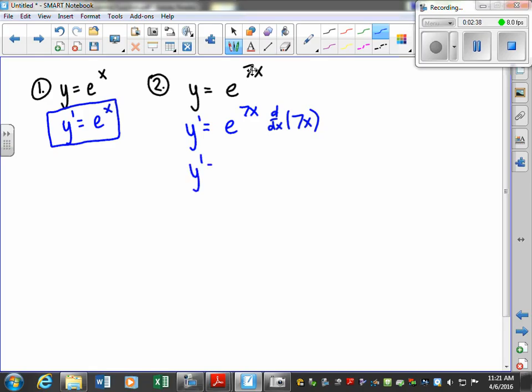So we'll have d dx of 7x. So y prime is just going to be e to the 7x. And we evaluate the derivative here, which is just 7. So y prime is equal to 7e to the 7x. Now this one in particular you tend to get really quick with and not have to write this intermediate step in the beginning. But let's just do it for good practice.